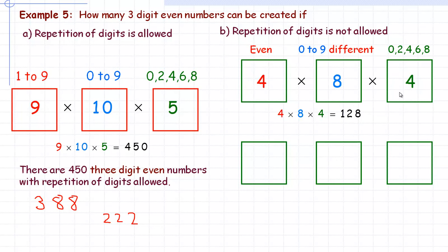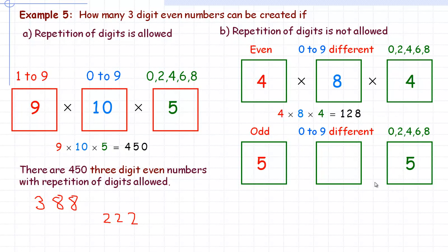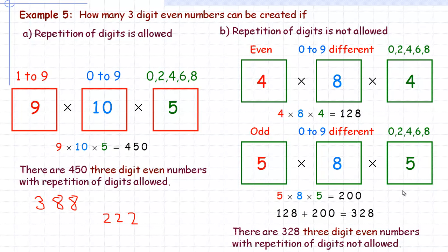Case 2: the hundreds digit is odd — it can be 1, 3, 5, 7, or 9, giving 5 choices. Since no even digit has been used yet, there are still 5 choices for the ones digit (0, 2, 4, 6, or 8). Two digits are used between hundreds and ones, leaving 8 choices for the tens digit. So: 5 times 8 times 5 equals 200. Adding the two cases: 128 plus 200 equals 328. There are 328 three-digit even numbers with repetition of digits not allowed.